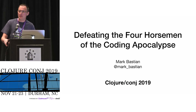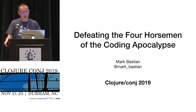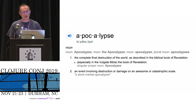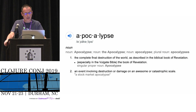Good afternoon, everybody. I'm Mark Bastian. I'm pleased to be here at Clojure/Con to be able to speak. My topic is defeating the four horsemen of the coding apocalypse. Since this is a Clojure talk, we need to start with a definition of the apocalypse — the complete final destruction of the world as described in the biblical book of Revelation, or an event involving destruction or damage on an awesome or catastrophic scale.